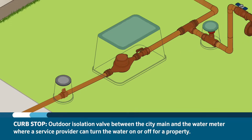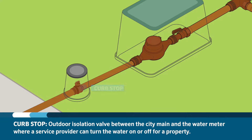Between the city main and the water meter, you may find a curb stop. A curb stop is an outdoor isolation valve where the water provider can turn water on or off for a property. This is usually found in a valve box just inside the property line. In cold weather climates, this valve is deep in the ground below the frost line.